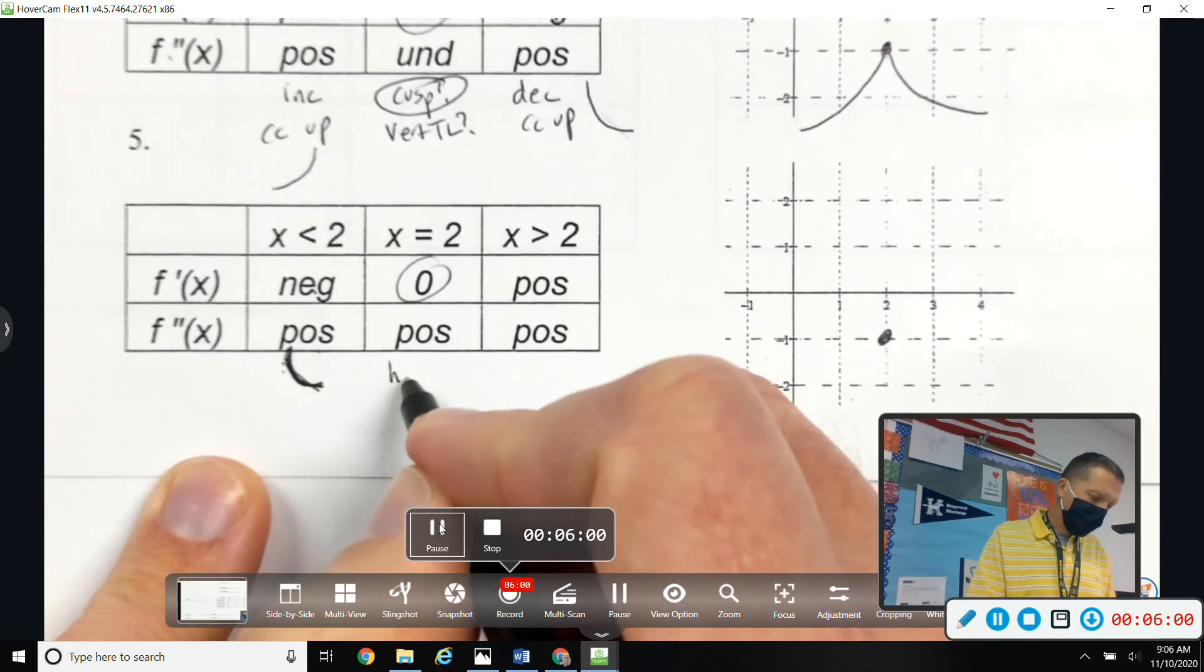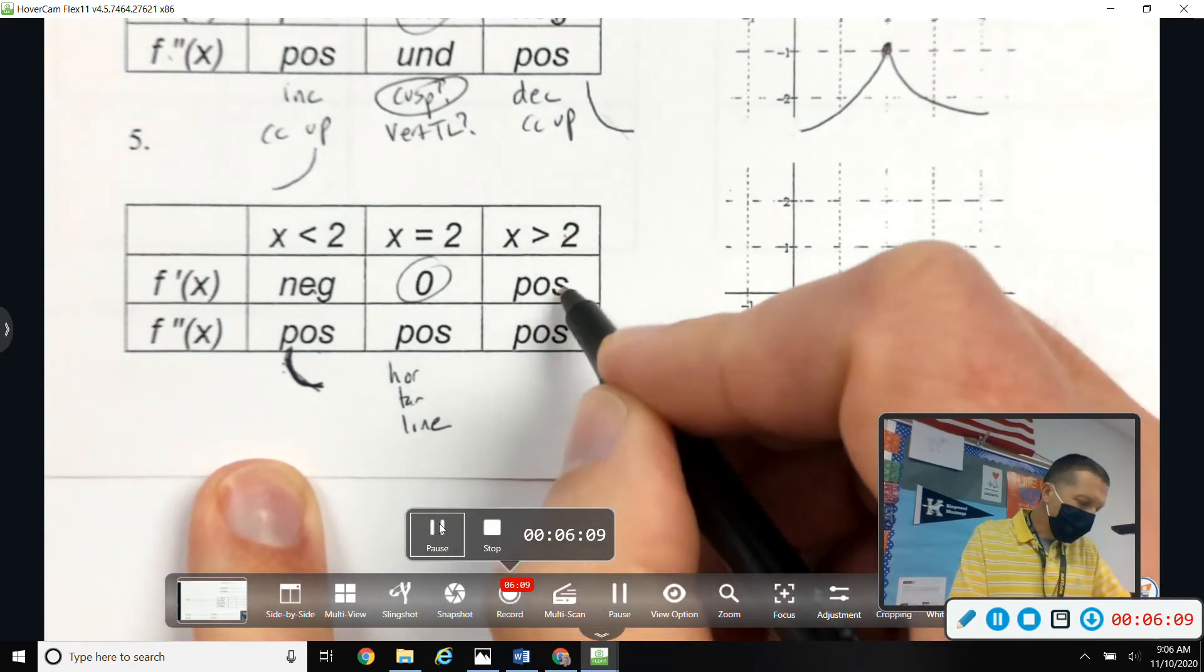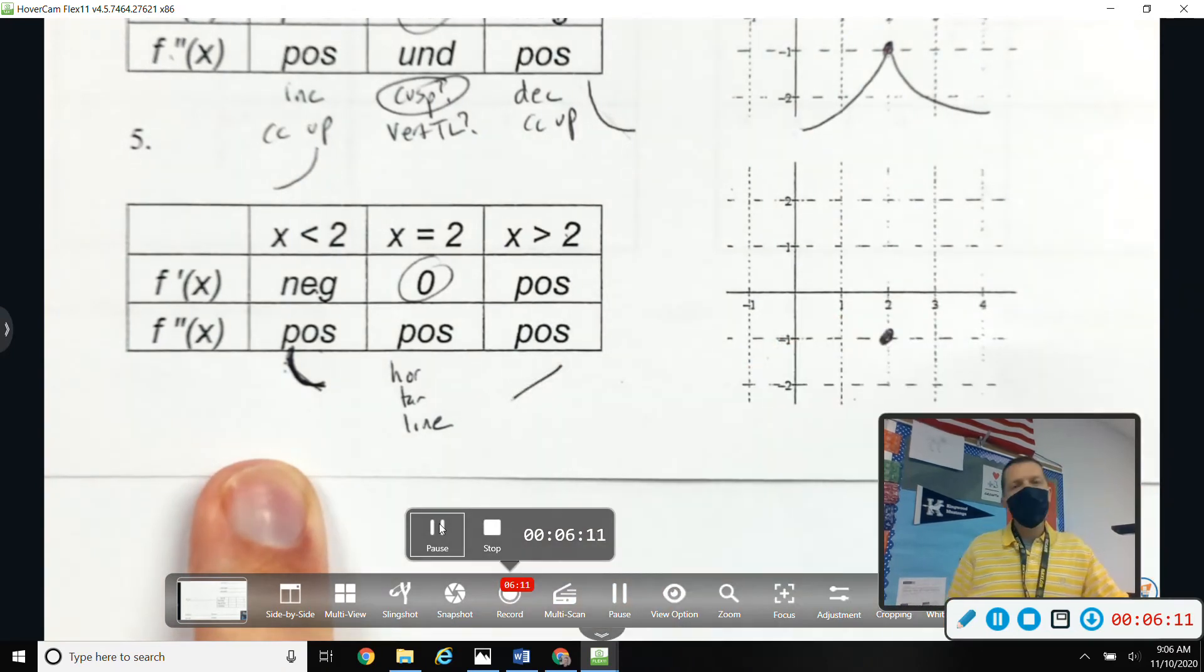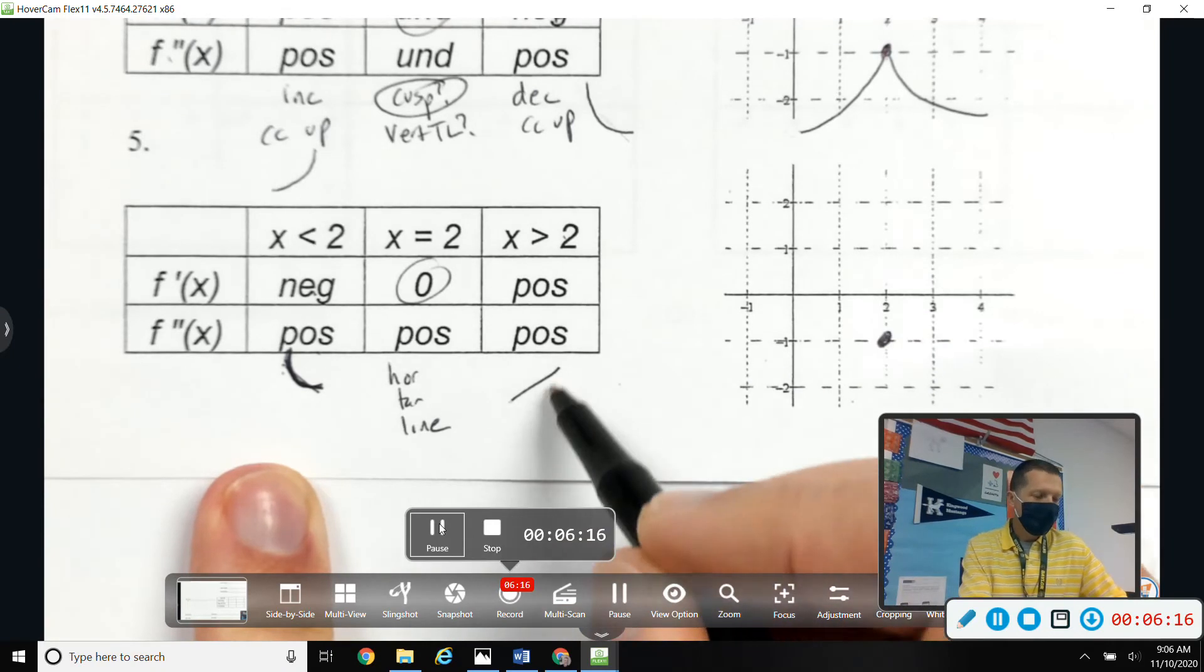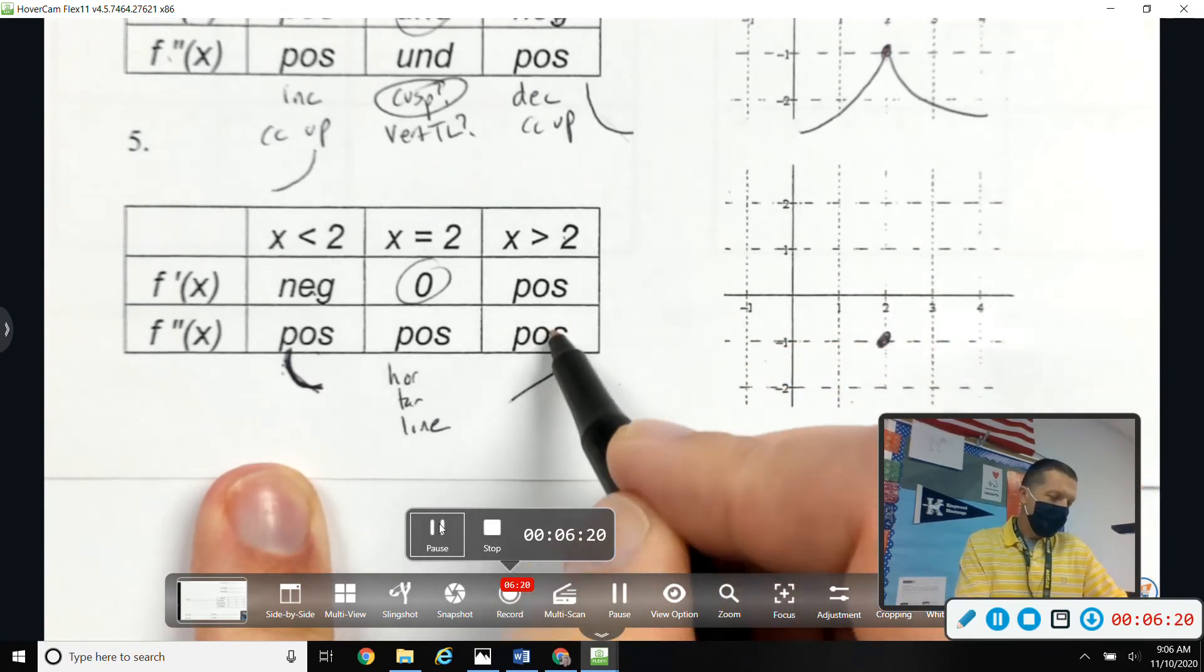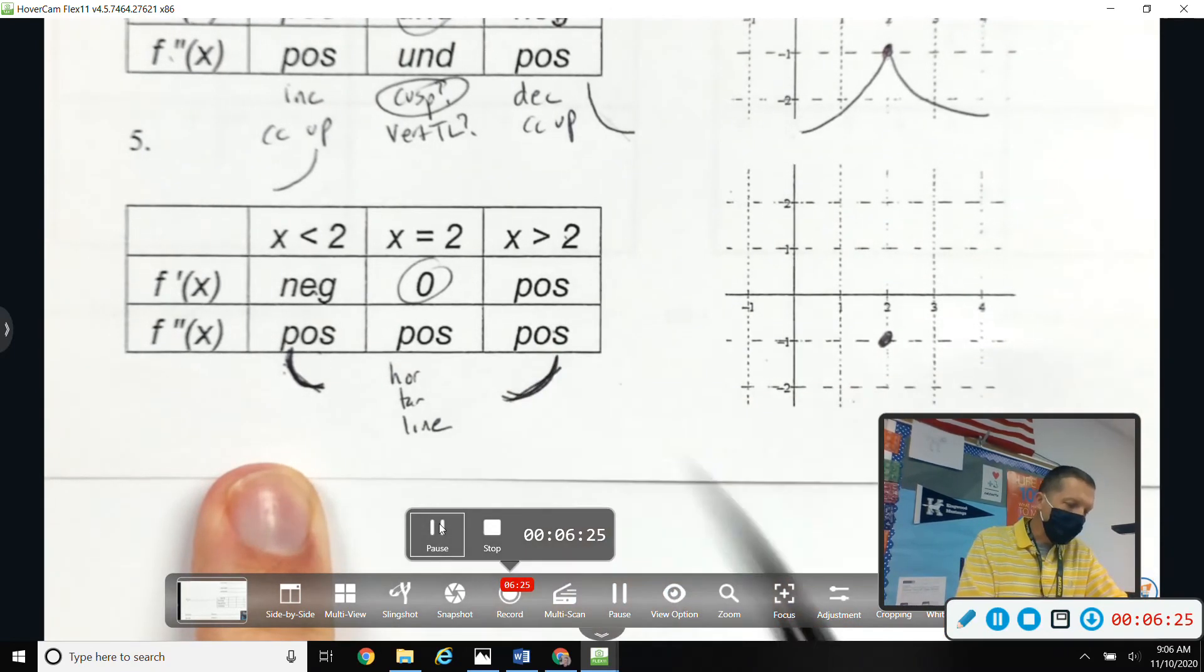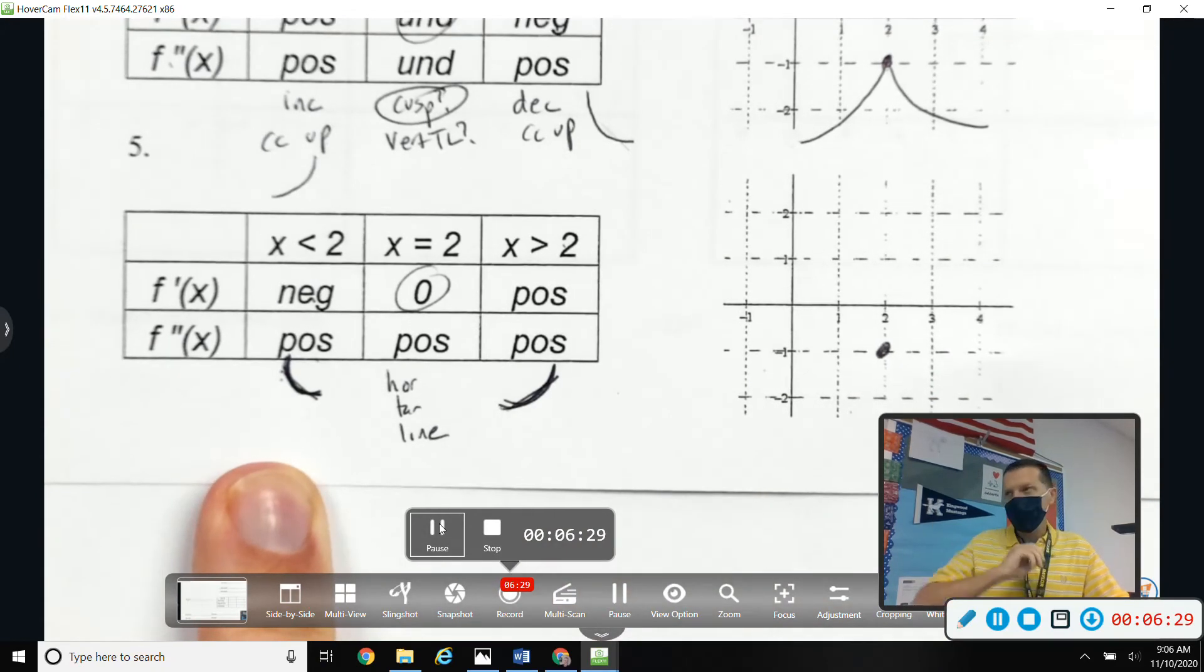This one has a horizontal tangent line, so that's more helpful than undefined, I think. X greater than 2, we're increasing. Again, if you're having trouble keeping track of both things, just draw a straight line and then tweak your straight line based on concavity. Concave up, so I'll tweak my increasing line to be a little bit concave up. And so maybe that's a strategy - draw a straight line for increasing or decreasing and then tweak a little bit to get the concavity.